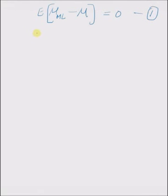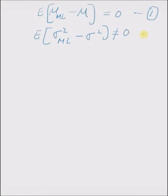The second property is that the bias of the maximum likelihood estimate of the variance is non-zero. In other words, the maximum likelihood estimate of the variance is a biased estimate.